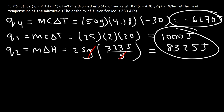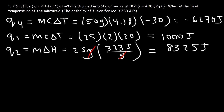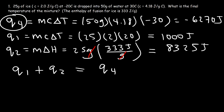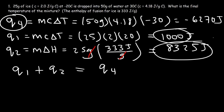The temperature of the water is going to drop from 30 to zero, and at that time the ice is still going to be melting. Most of the ice will melt, but not all of it. So let's calculate how many grams of ice will melt. We already know the final temperature is zero. So Q1 plus Q2 has to equal Q4. The total energy released has to equal the total energy absorbed. Q2 at equilibrium is going to be 5,270, because 1,000 plus 5,270 equals 6,270.